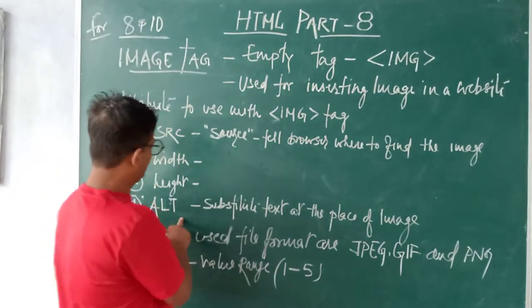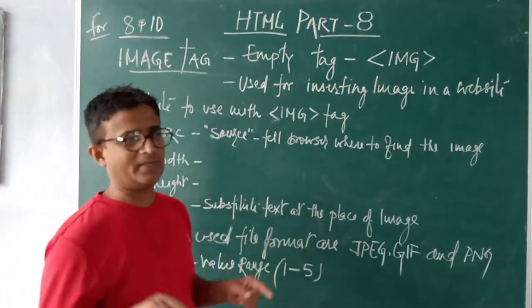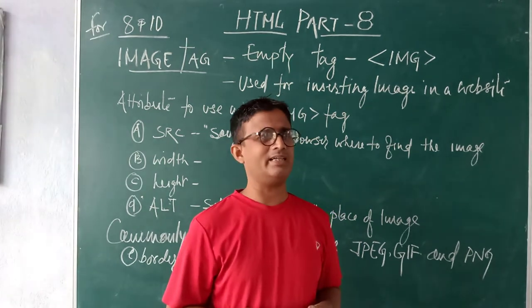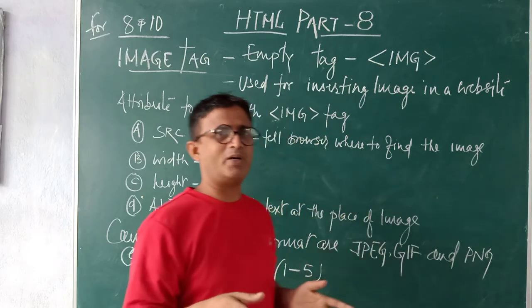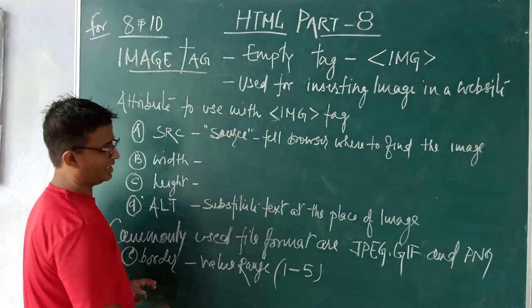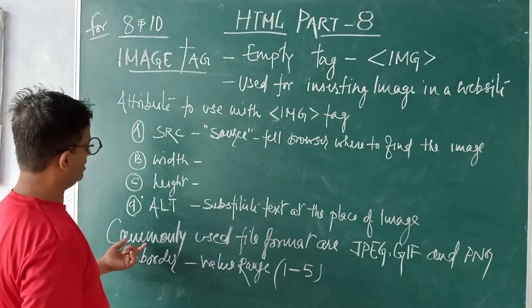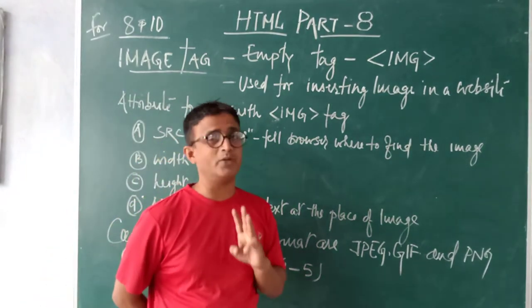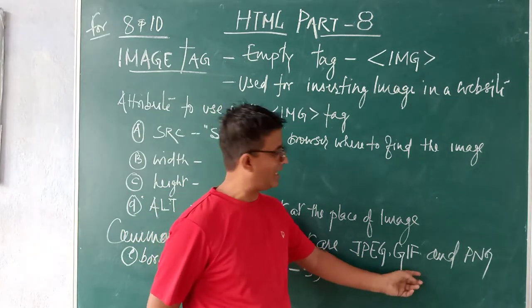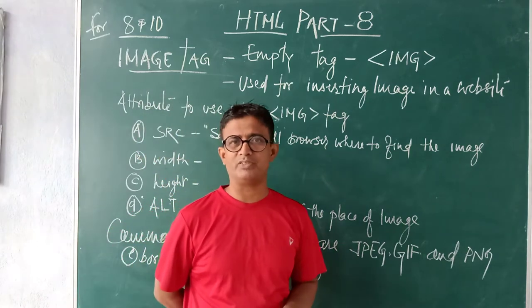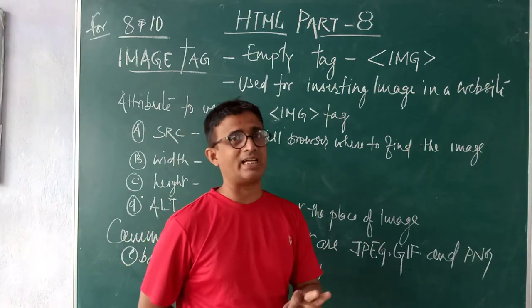Another thing is border. Suppose you have inserted an image without border, it will look dull. So what you do, you create some border for that particular image with the help of this border attribute of IMG tag. While inserting image, only three formats the browser accepts: JPEG format, GIF format, and PNG format. Only these three formats are supported by HTML and supported by the web browser.